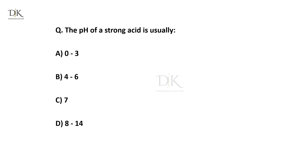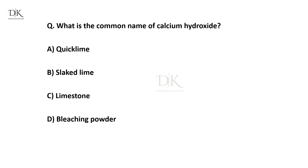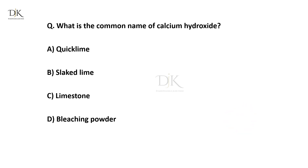The pH of a strong acid is usually? The right answer is 0–3. What is the common name of calcium hydroxide? The right answer is slaked lime.